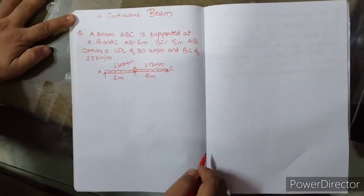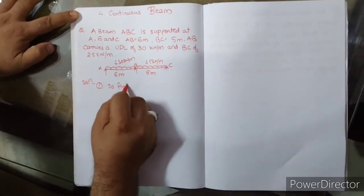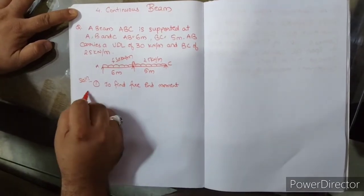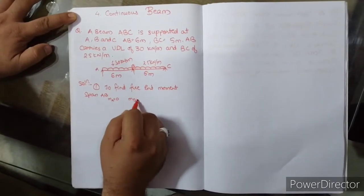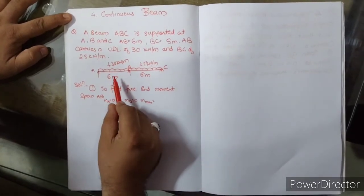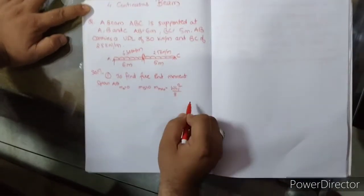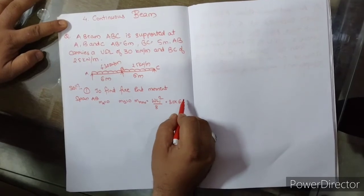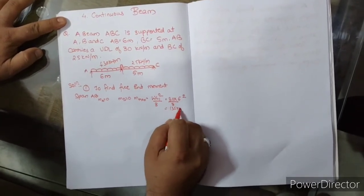सबसे पहले हम solution solve करेंगे. Step 1: To find free end moments. Span AB के लिए: M of A is equal to 0, M of B is equal to 0. M max is equal to — इसमें UDL है, तो formula होता है WL1 square by 8. W कितना दिया हुआ है? 30. L1 कितना दिया है? 6. तो 30 into 6 square upon 8. Answer है 135 kN·m.